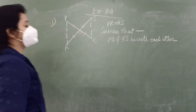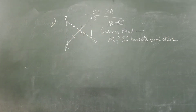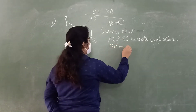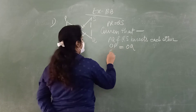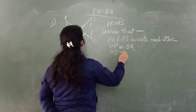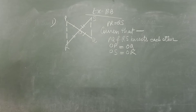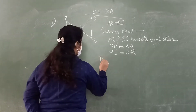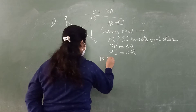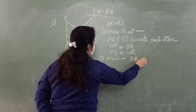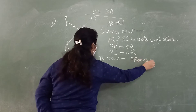When they bisect each other, it means that the two sides are equal: OP is equal to OQ, and OS is equal to OR. This is given. To prove: triangle OPR is congruent to triangle OQS.